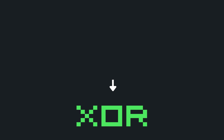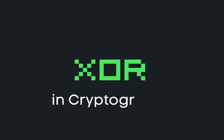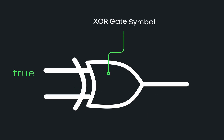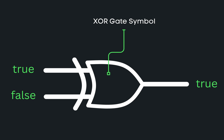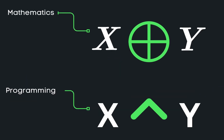We're going to explore this operator's use in cryptography. XOR is an operator that takes in two boolean values, which could be true, false, or if we're talking about computers, 1 and 0. It checks if one of the values is true, but not both. In research and mathematics, you'll typically see XOR as this symbol, and in programming languages, it's usually the caret symbol.